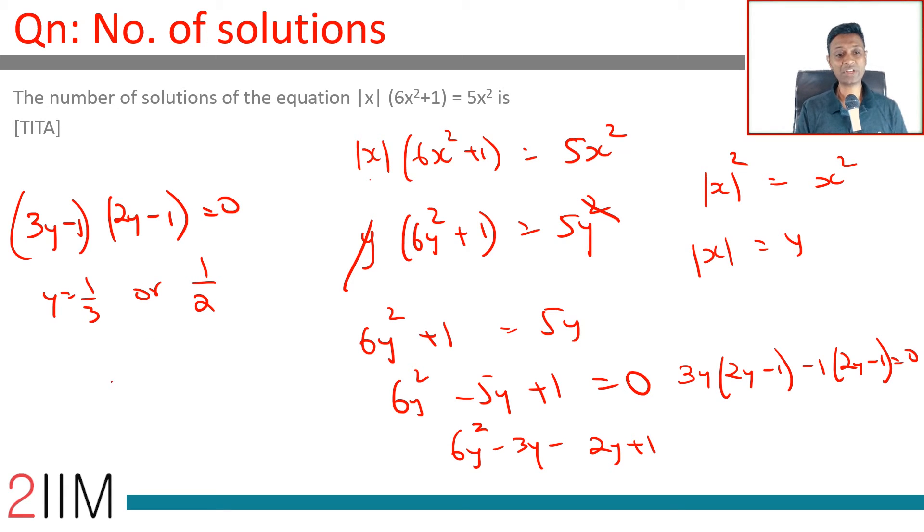Brilliant. Now, y = |x|. So x could be 1/3 or -1/3, 1/2 or -1/2. All of these will work. So there are four values for this.